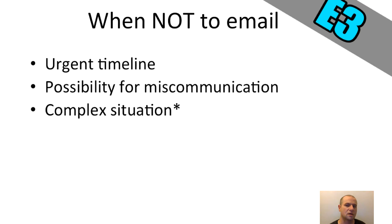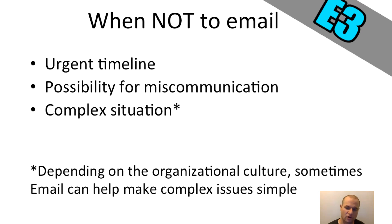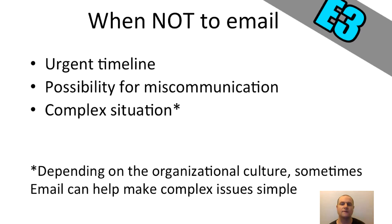Complex situations may require in-person, face-to-face conversations. There is an exception, though: depending on the organizational culture, the context, and the situation, email can actually help make a complex issue more simple. For example, I've often had a phone call where we got distracted and weren't always on topic. After the phone call, I'll send an email summarizing the main three points — one, two, three — with a brief description and the action or decision that needs to take place. This is a really good way that email can help clear up things that are unclear and get you through a complicated issue.